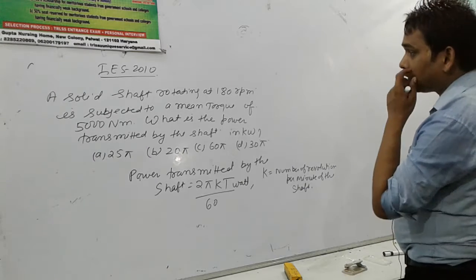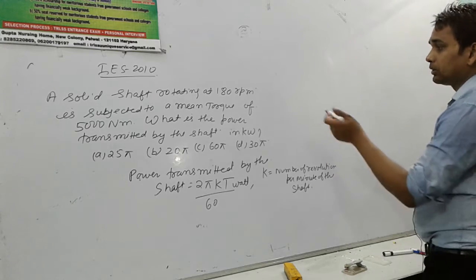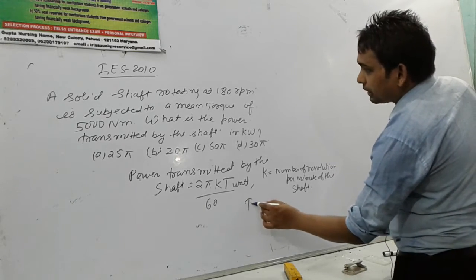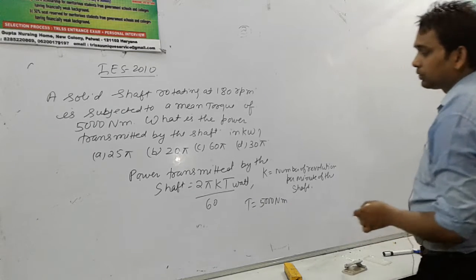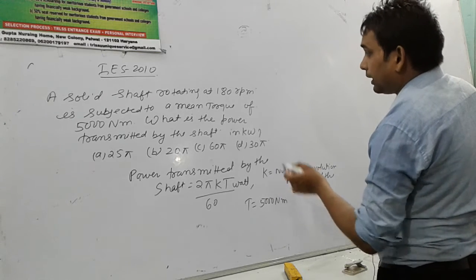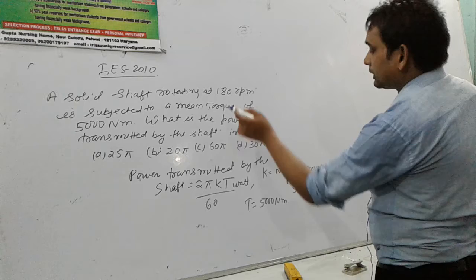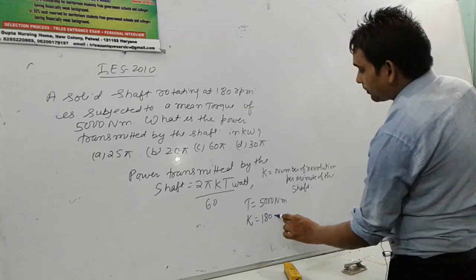What is the number of revolutions? What is given in the question? The value of torque is given. Torque is given where T is 5000 Nm. And another value is given, the revolutions. The value of N is also given, 180 RPM.